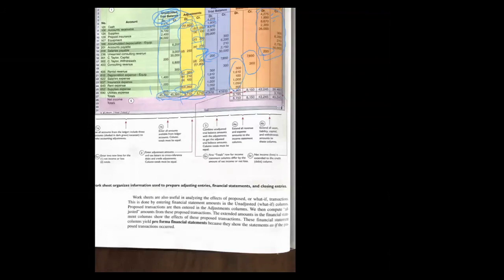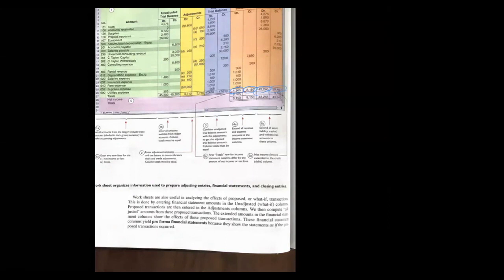When you add up the debits, it's 4,365 in the debit column of the income statement, 8,150 in the credit column of the income statement, 43,245 in the debit column of the balance sheet, and 39,460 in the credit column of the balance sheet.